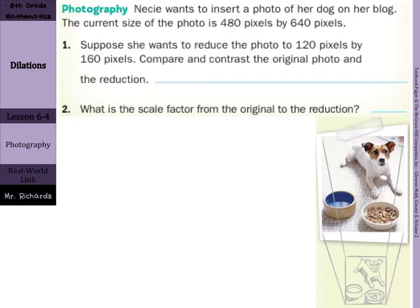Well, basically if you take 480 divided by 4 and 640 divided by 4, you would get 120 and 160. So the dimensions of the original photo are 4 times the dimensions of the new.